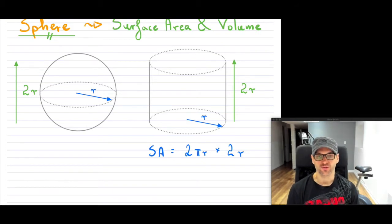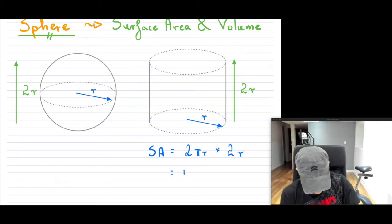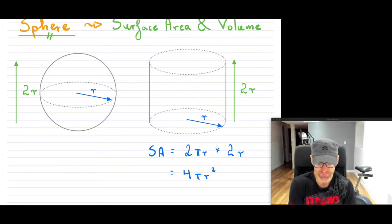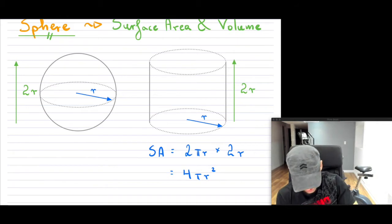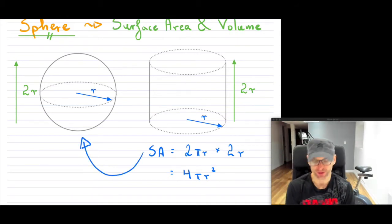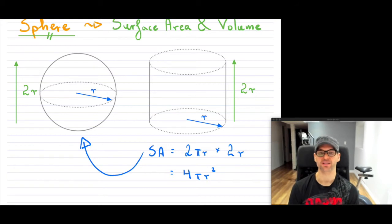And so if you multiply this out, this is going to be 4πr². And that turns out to be the exact surface area of our sphere. And that's what Archimedes has shown.